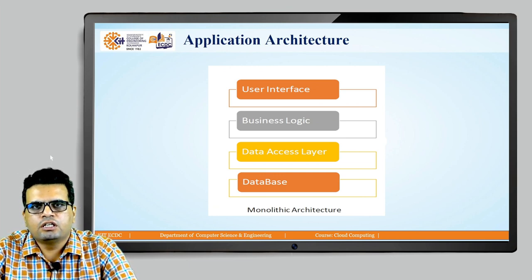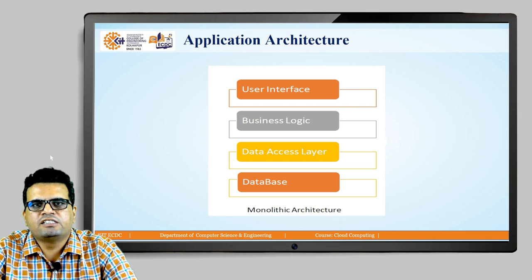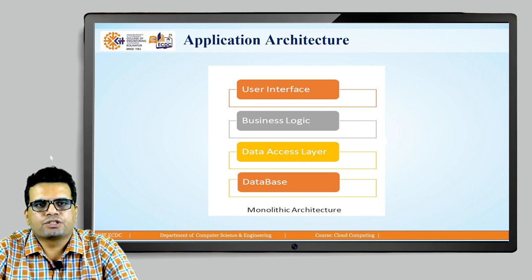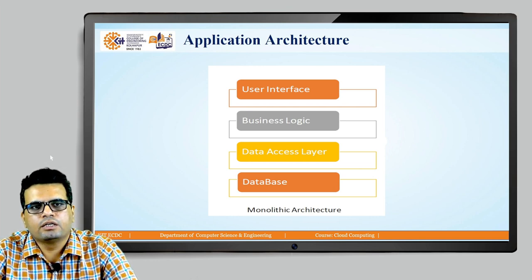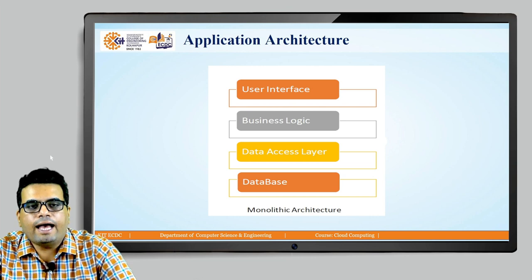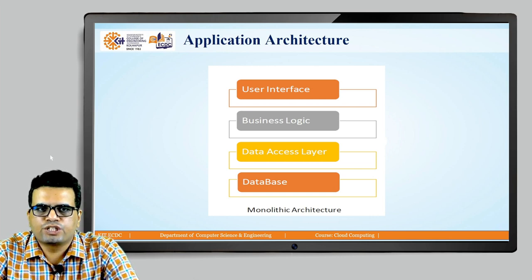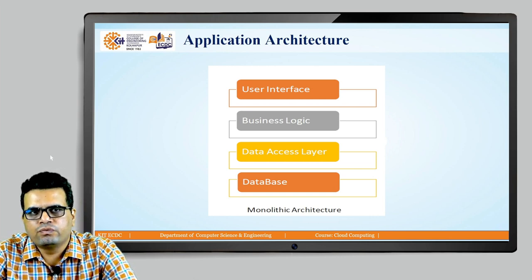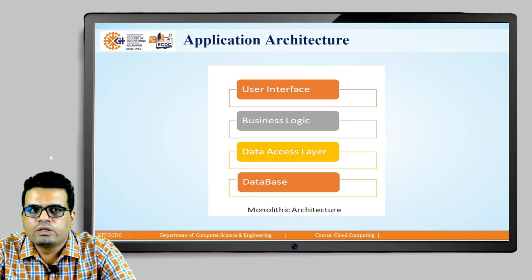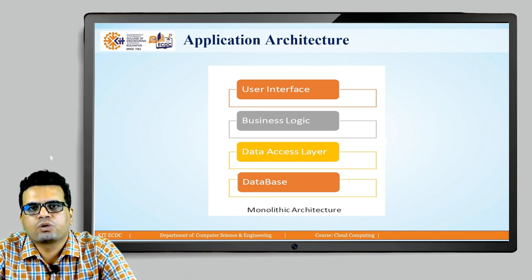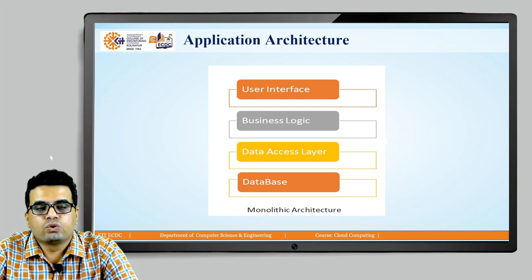Let us discuss monolithic architecture. Monolithic architecture is like one giant organ. If you look at the diagram, everything is contained inside a box — from the user interface, business logic, and data access layer to the database — everything acts as a single layer. It is easy to develop, deploy, test, and debug as you are dealing with only one layer of an application. The data access layer interacts with the business logic to get the job done from the database.